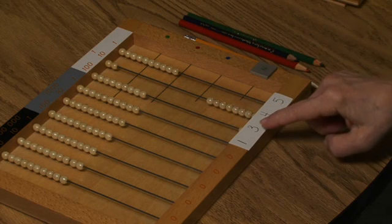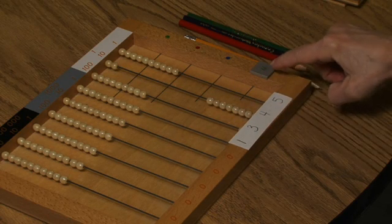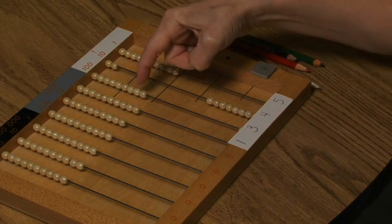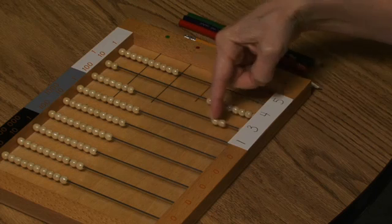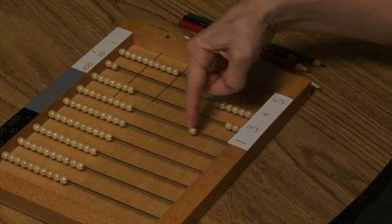3 taken 4 times is 12 hundreds. 12 hundreds is recorded as 2 in the hundreds place, 1 in the thousands place.